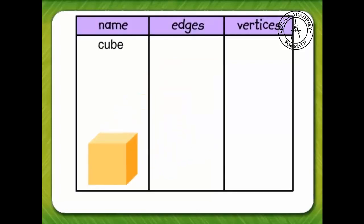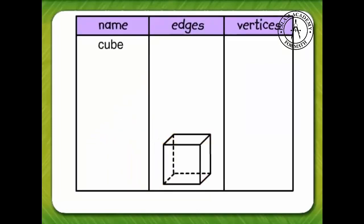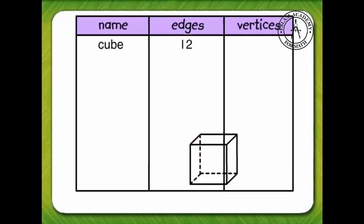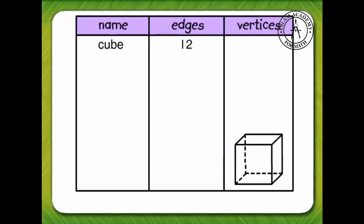It's a cube. How many edges does a cube have? 1, 2, 3, 4, 5, 6, 7, 8, 9, 10, 11, 12. A cube has 12 edges.